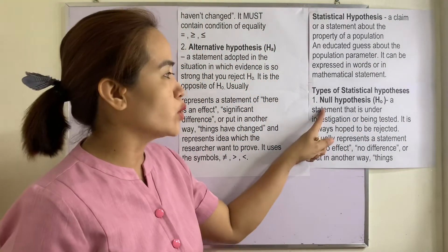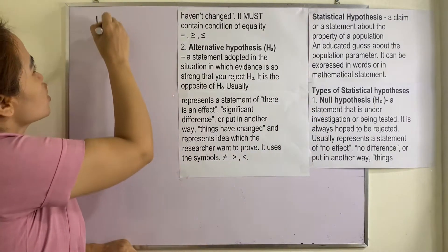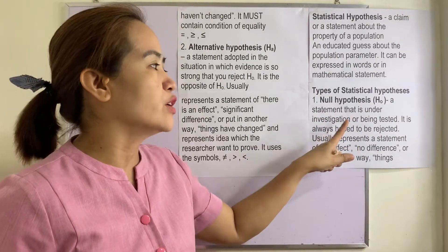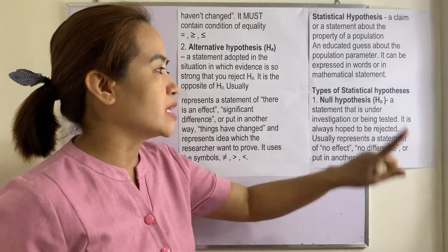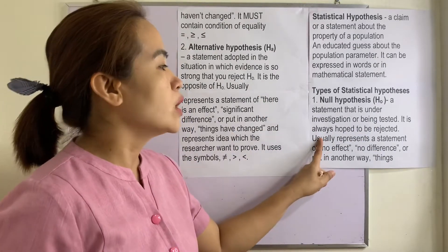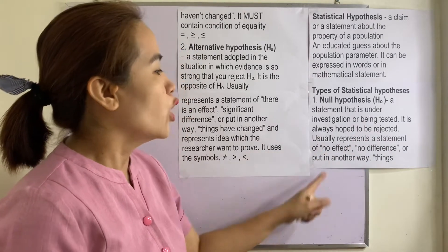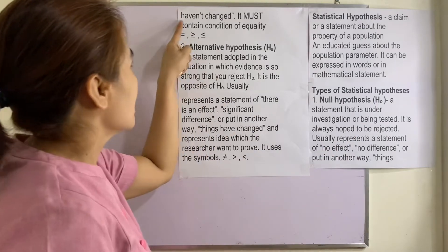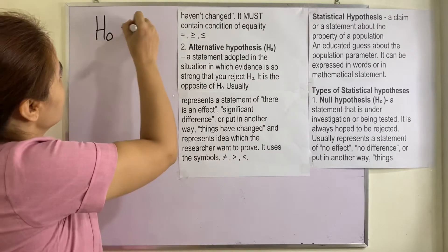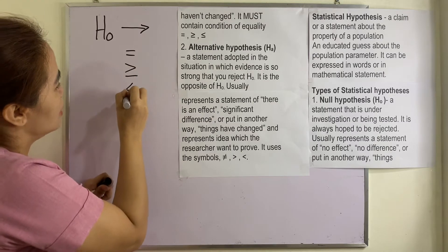The first one is what we call null hypothesis, denoted by H sub O. It is a statement that is under investigation or being tested, and it is always hoped to be rejected. It usually represents a statement of no effect, no difference, or in other words, things haven't changed. It must contain a condition of equality, so we have equals, greater than or equal to, or less than or equal to.